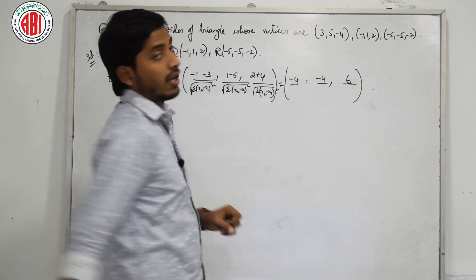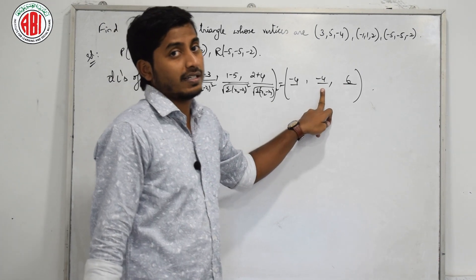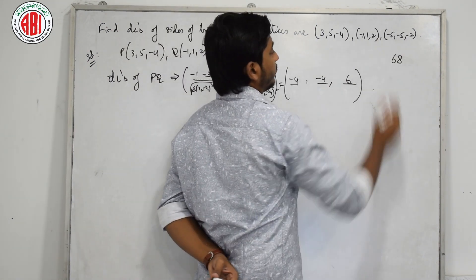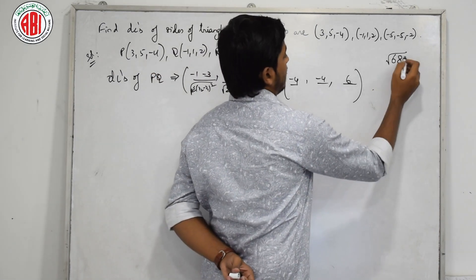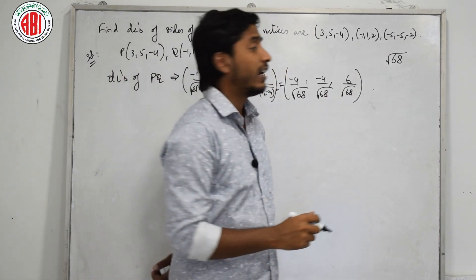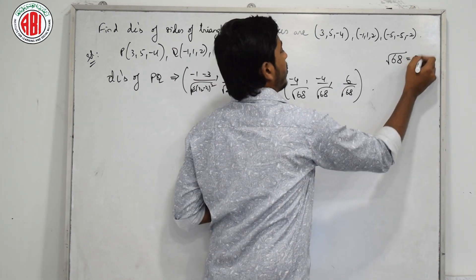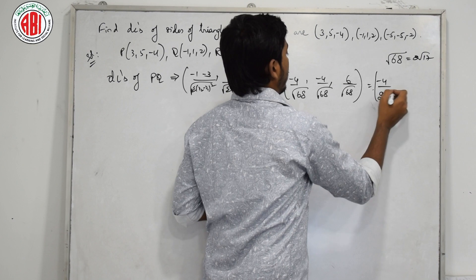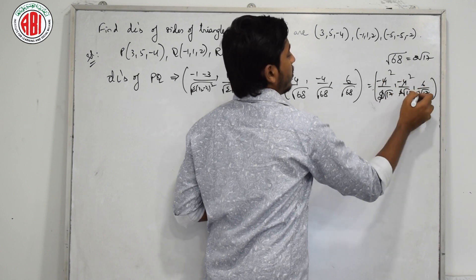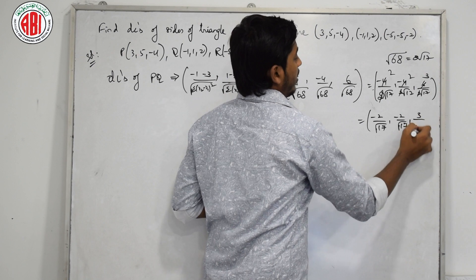Now the denominator: 4 squared is 16, 4 squared is 16, 6 squared is 36. So 16 plus 16 plus 36 is 68, which is root 68. We can simplify root 68 as 4 times 17, so root 68 equals 2 root 17. Therefore the DCs of PQ are: minus 4 by 2 root 17, minus 4 by 2 root 17, 6 by 2 root 17, which simplifies to minus 2 by root 17, minus 2 by root 17, 3 by root 17.